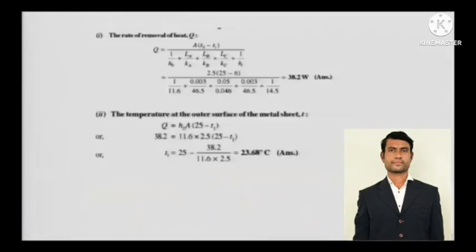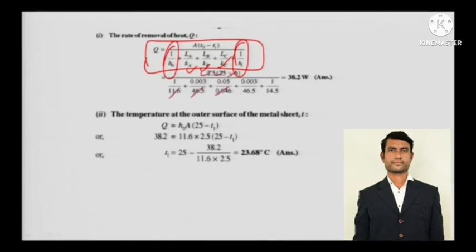The rate of removal of heat, Q, equals TO minus TI divided by the sum of resistances. Since you have three portions for conduction, there are three conductive resistances. Since you have an outside ambient and an inside ambient, there will be two convective resistances: 1 over HO and 1 over HI. Put all the values in and you will get 38.2 watts.